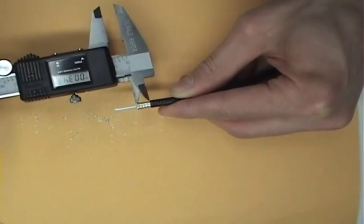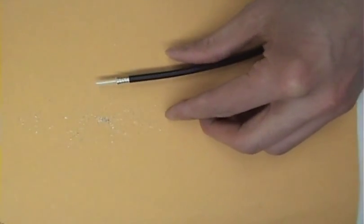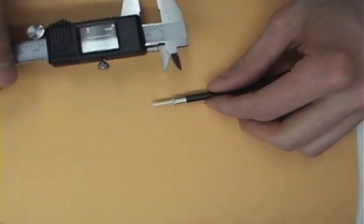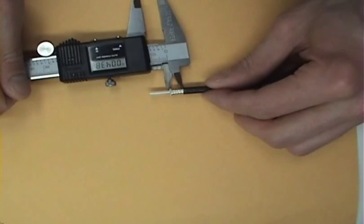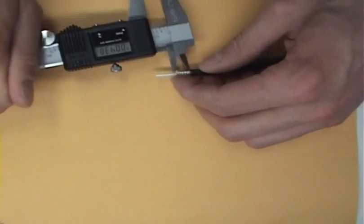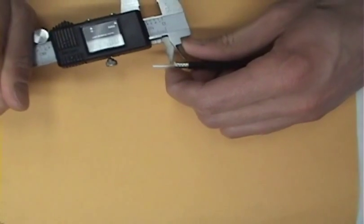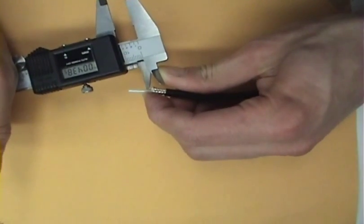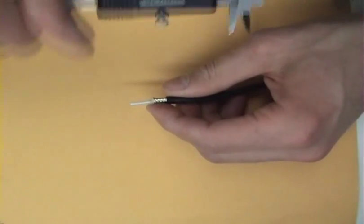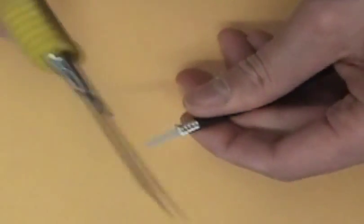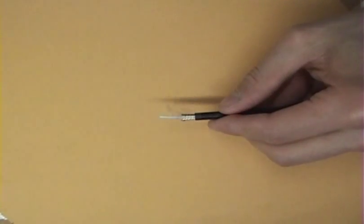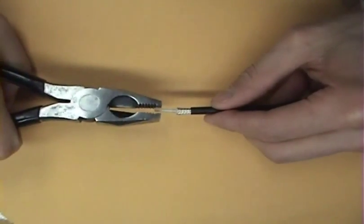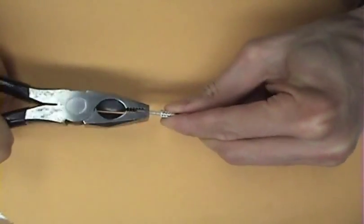Once you are happy with the length of the braid, it is now time to trim the dielectric to 0.437 inches. I use the vernier calipers to make a mark in the dielectric, and then I use a knife to make the cut. After a 360 degree cut is made, I use a pair of pliers to pull off the dielectric.